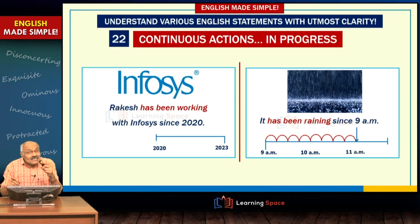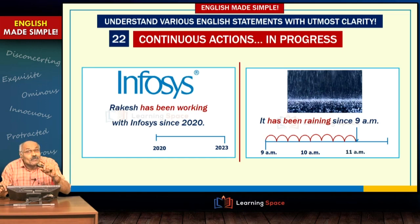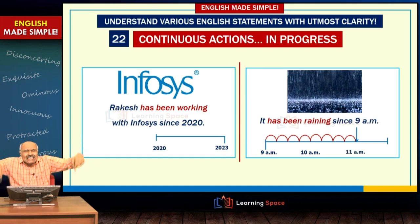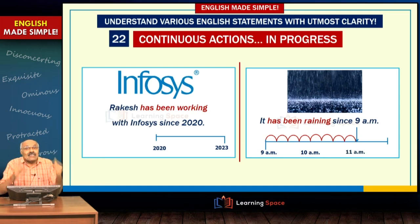In the previous class we discussed: 'She has lived in Delhi for 10 years' — from 2013 to 2023 she lived in Delhi and later shifted to Chandigarh. But if she is still living in Delhi you have to say 'she has been living in Delhi since 2013'. Similarly, 'I have been teaching current affairs for the past eight years' and 'Rakesh has been working with Infosys since 2020' — he is still working there.